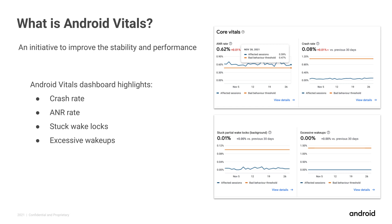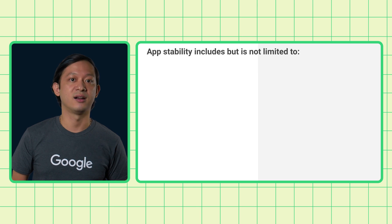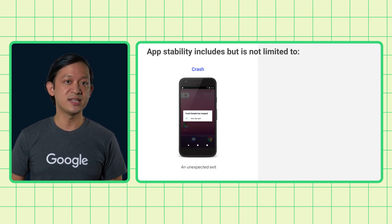For this video, I will focus on the two most important vitals: crash rate and ANR rate. These are the most common issues faced by users and have a large impact on the user's experience, as they will be unable to use their apps. Crash and ANR are part of app stability. A crash is an unexpected exit.